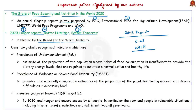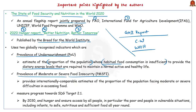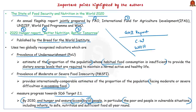Both reports use globally recognized indicators: prevalence of undernourishment, which estimates the proportion of population whose habitual food consumption is insufficient to provide required dietary energy levels for a normal, active and healthy life; and prevalence of moderate or severe food insecurity, which provides internationally comparable estimates of the proportion of the population facing difficulties in accessing food. Both indicators measure progress towards SDG target 2.1, which talks about ending hunger and ensuring access by all people — particularly the poor and vulnerable, including infants — to safe, nutritious and sufficient food all year round, to be achieved by 2030.